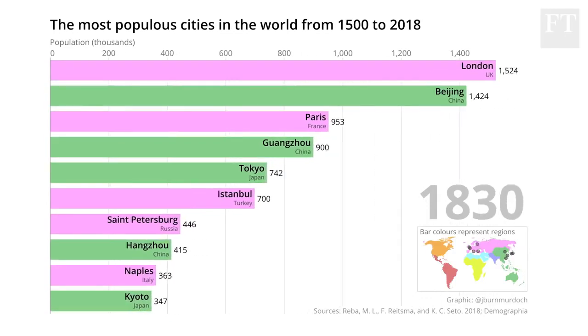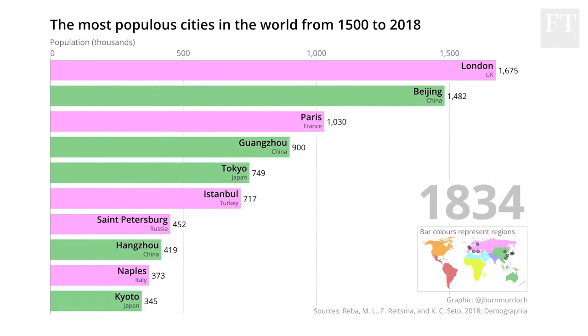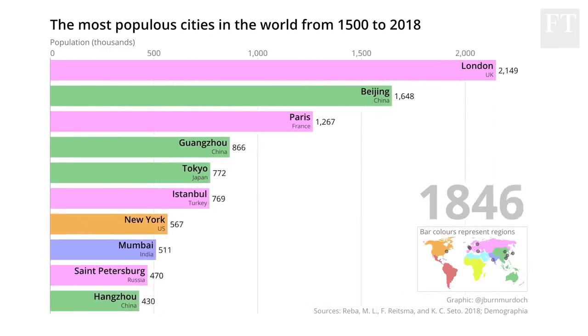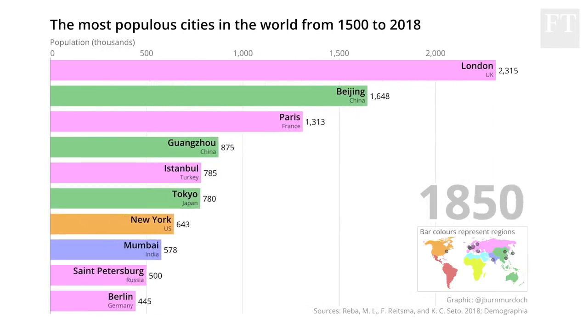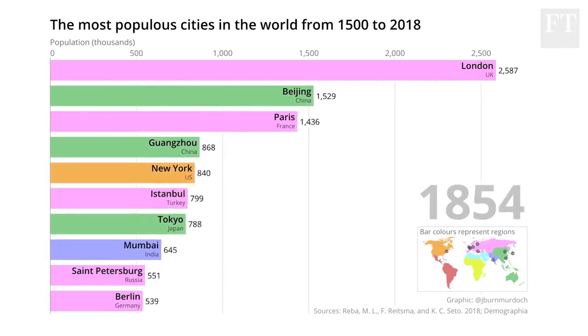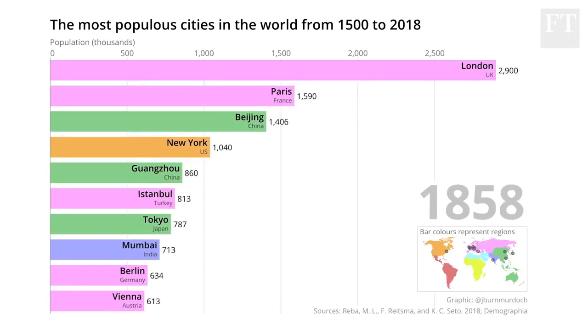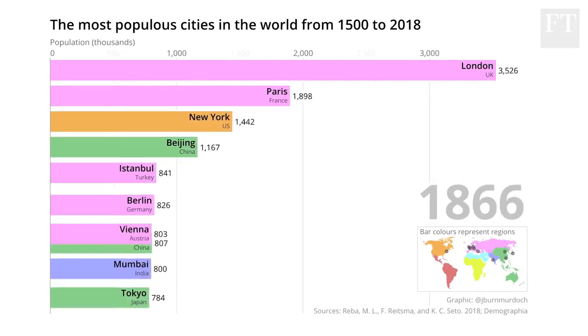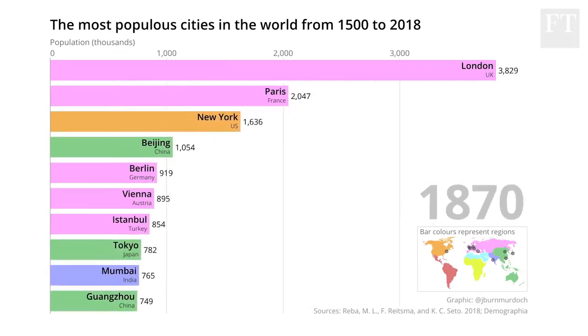Watch that axis stretching out as London soars, hitting two million before 1850 and then racing on towards three million — all other cities pretty much left in the dust now.